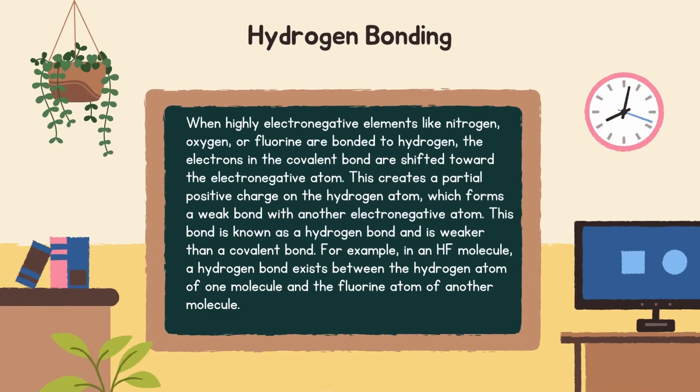What is hydrogen bonding? When highly electronegative elements like nitrogen, oxygen or fluorine are bonded to hydrogen, the electrons in the covalent bond are shifted toward the electronegative atom. This creates a partial positive charge on the hydrogen atom which forms a weak bond with another electronegative atom. This bond is known as a hydrogen bond and is weaker than a covalent bond. For example, in an HF molecule, a hydrogen bond exists between the hydrogen atom of one molecule and the fluorine atom of another molecule.